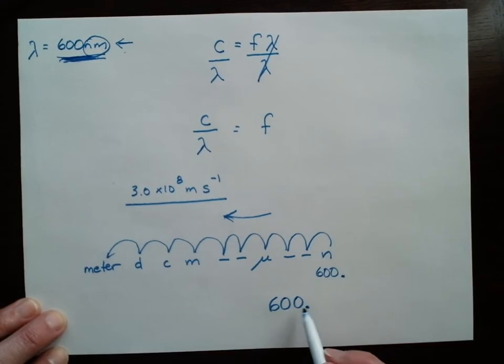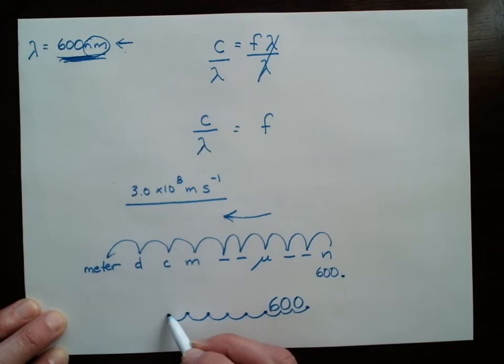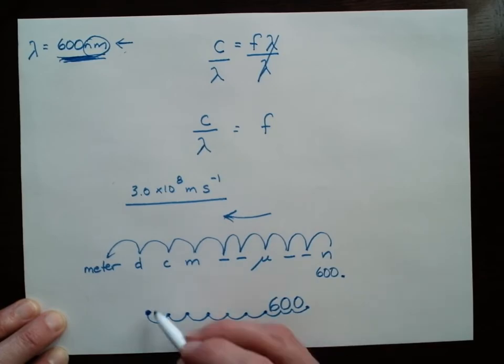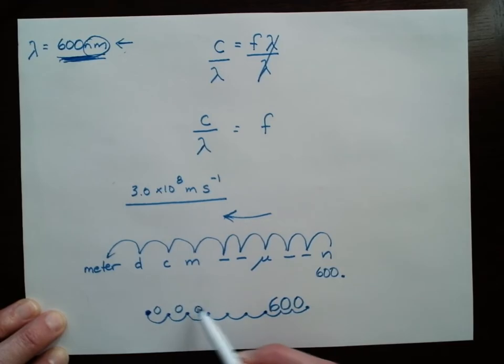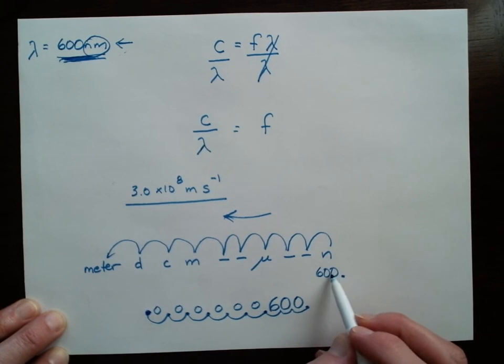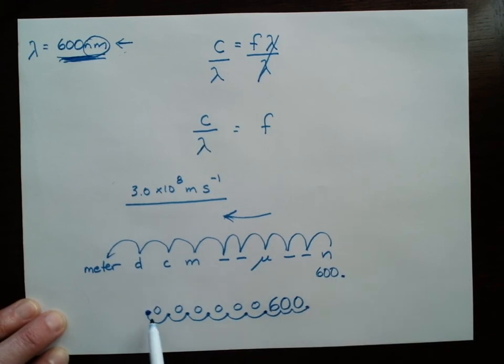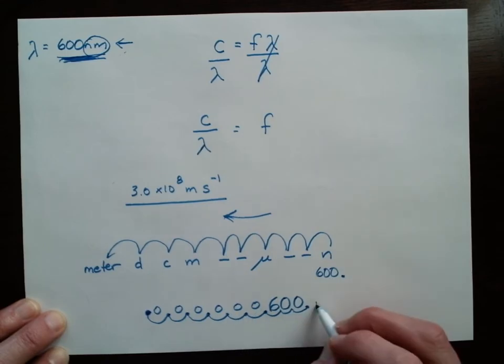9 spaces this direction. Here we go. 1, 2, 3, 4, 5, 6, 7, 8, 9. So that's where the decimal ends up. And in these empty spaces, I'm going to put 0s. Let me count how many there are. 1, 2, 3, 4, 5, 6. So I've converted my nanometer, 600 nanometers, to 0.000000600 meters.